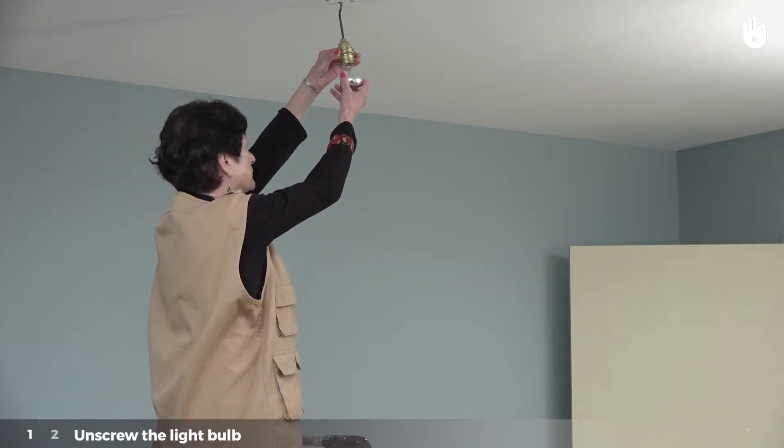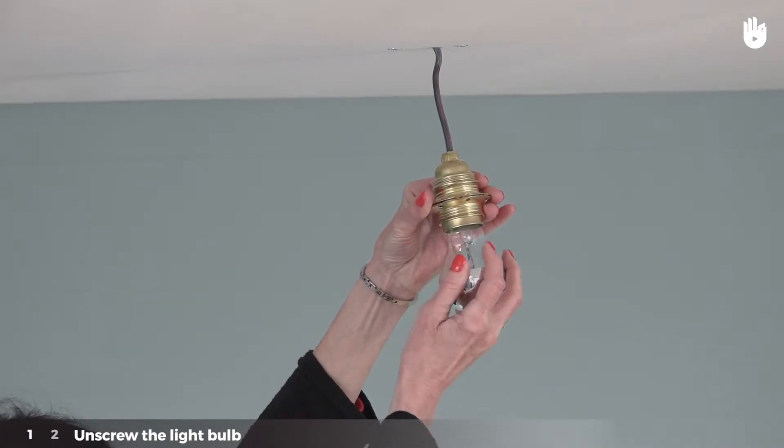For the screw-in base, all you need to do is unscrew the bulb to be replaced by turning it counterclockwise.